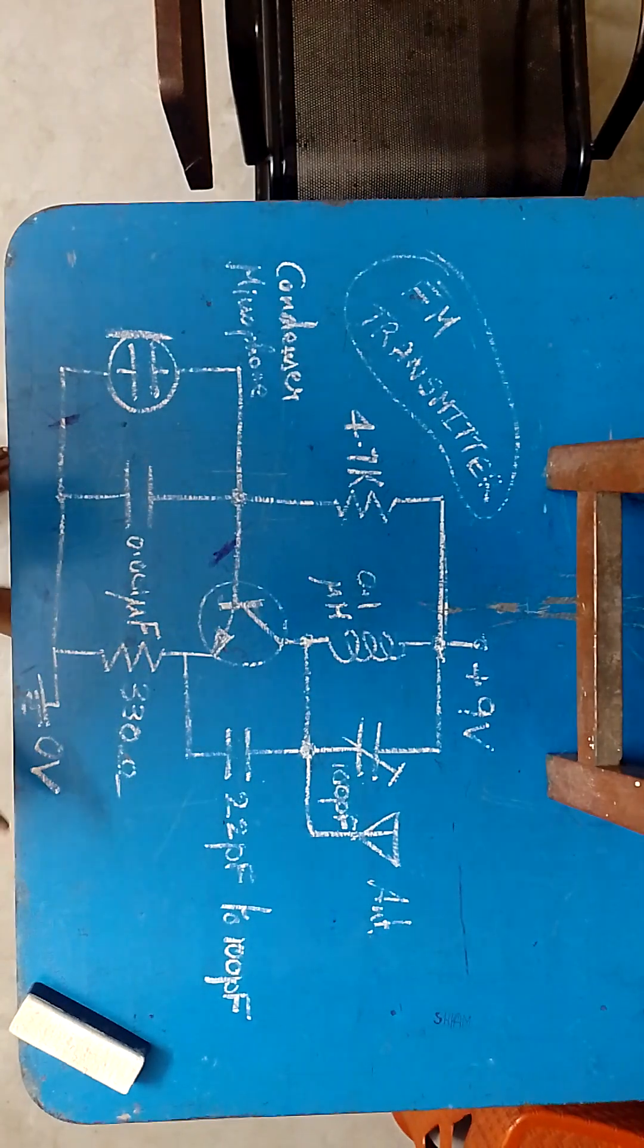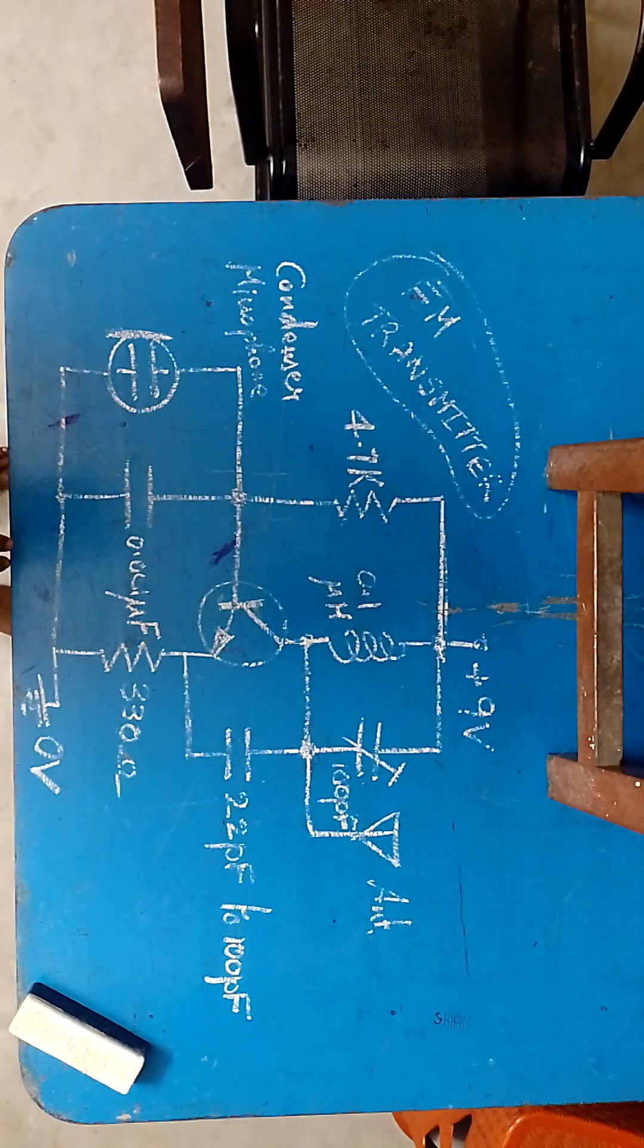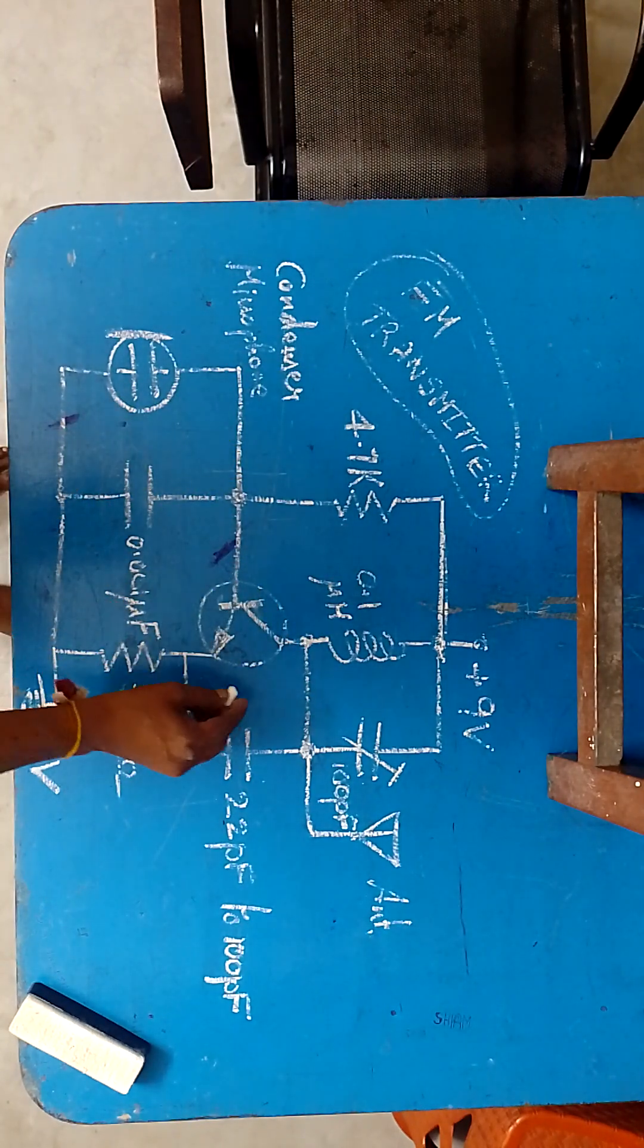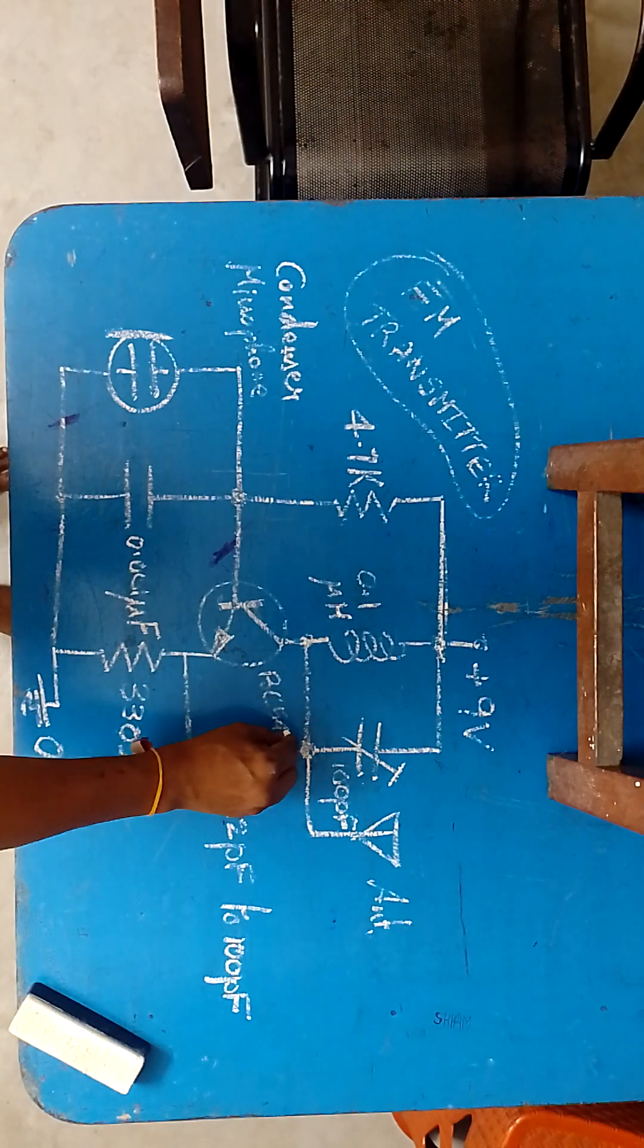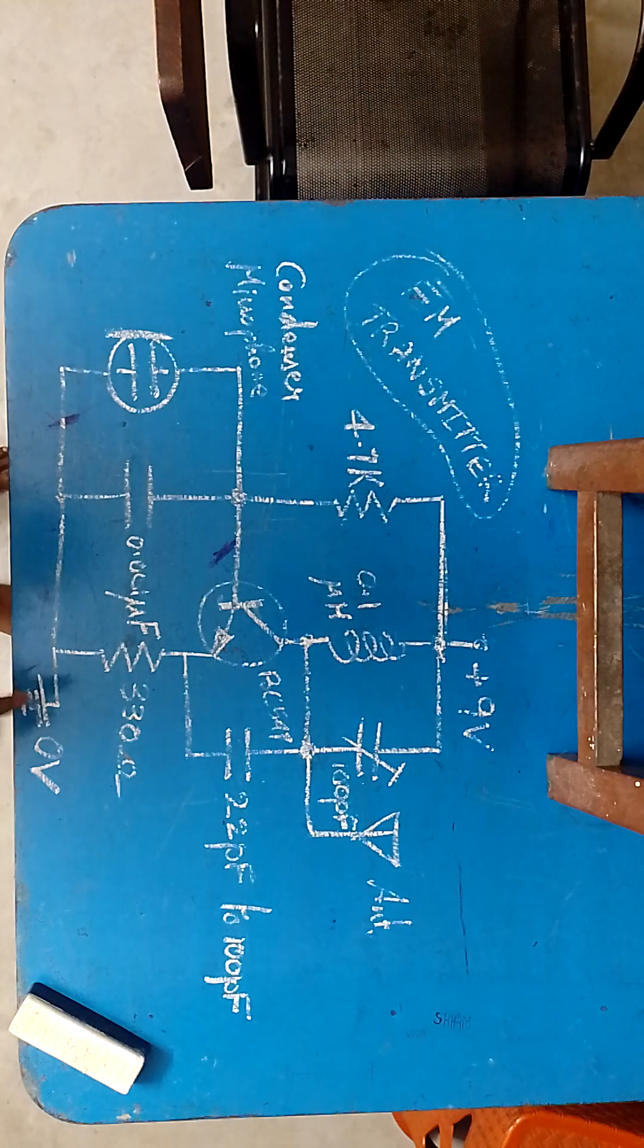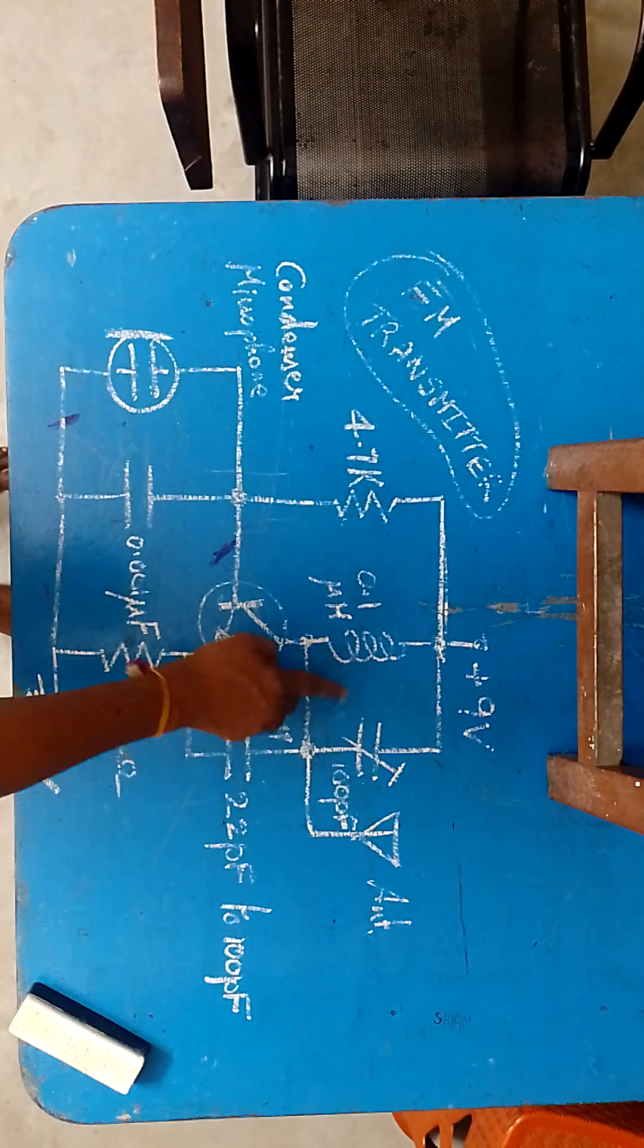So this is the circuit diagram of an FM transmitter. Here we use a single transistor which is BC547. Actually the resonance circuit is L and C.